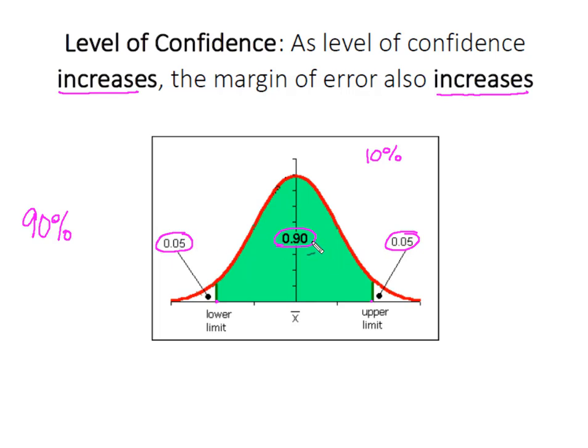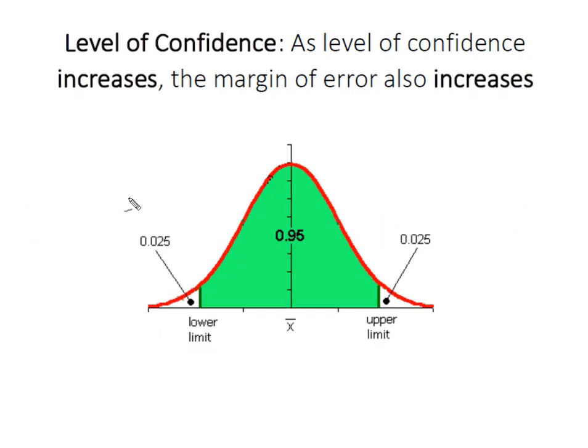What's going to happen though when I go to say I want to be 95 percent confident? In other words, 95 percent of the time the true population parameter will fall within my interval. Well now at this 95 percent level of confidence I only have two and a half percent of the data below the lower boundary and two and a half percent above.